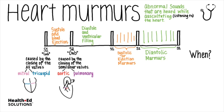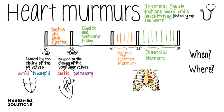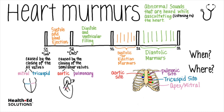You can get a better idea of which valve or area of the heart is making the abnormal sound by where the murmur is most clearly and loudly heard. The apex of the heart is best for listening to mitral valve function. The tricuspid area is usually best heard just to the side of the sternum and a little higher than the apex. The aortic and pulmonary valves are best heard near the base or the top of the heart on either side of the sternum.